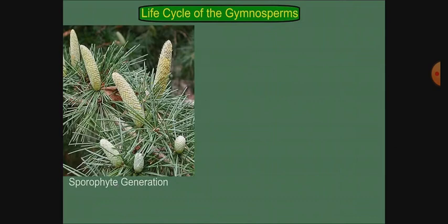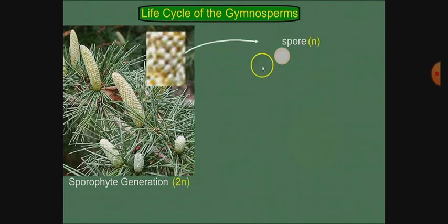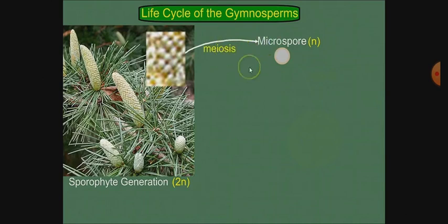First, we talk about the male cone. This is called the sporophytic generation. The cone produces spores. The spore mother cell is diploid. It undergoes meiosis and produces haploid microspores. Diploid means there are two sets of chromosomes — for example, in humans there are 46 chromosomes total.